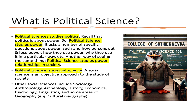Political science is a social science — an objective approach to the study of society. Other social sciences include sociology, anthropology, archaeology, history, economics, psychology, linguistics, and some areas of geography, like cultural geography.